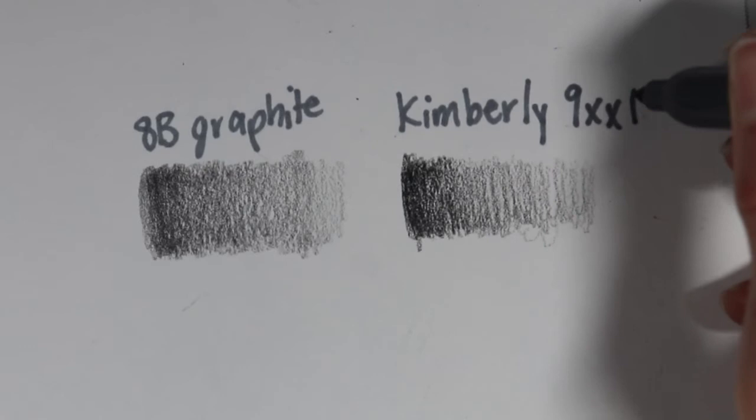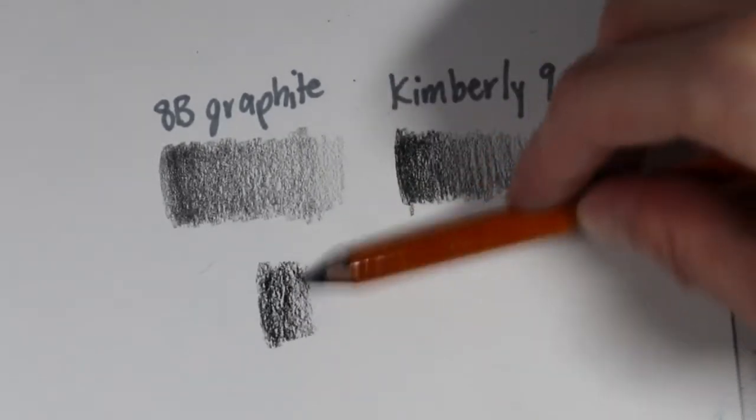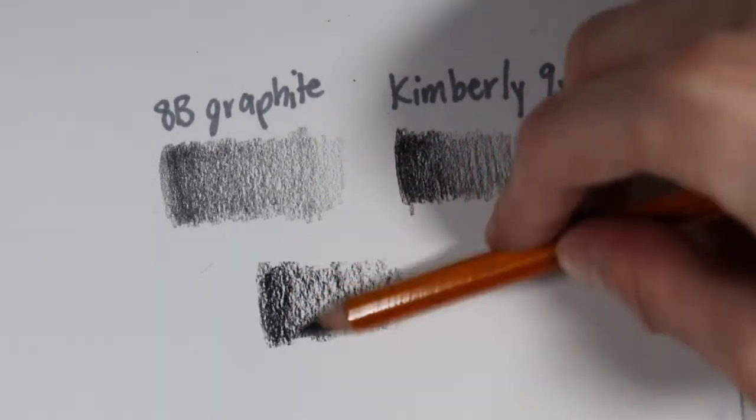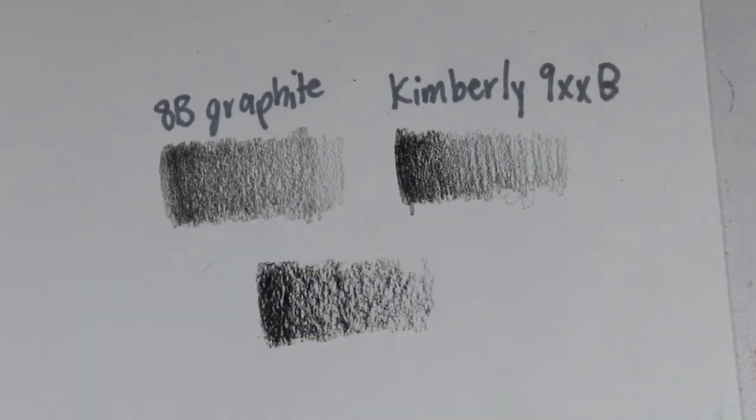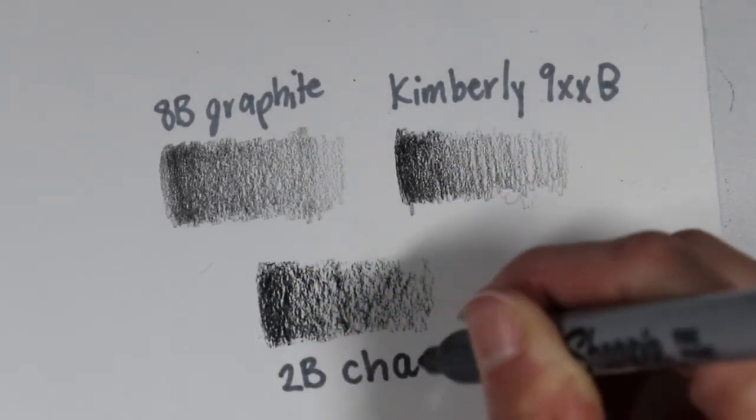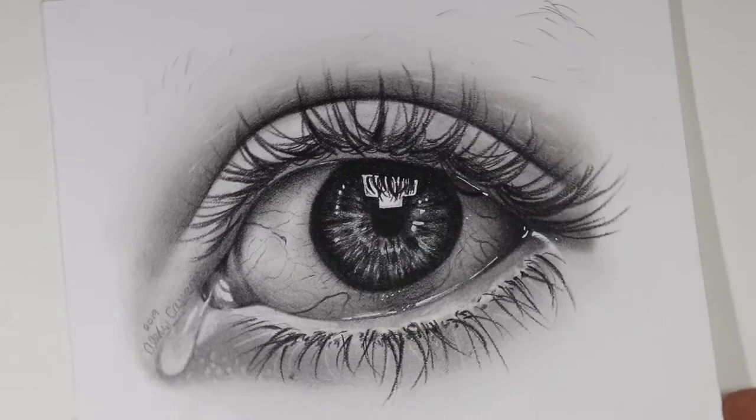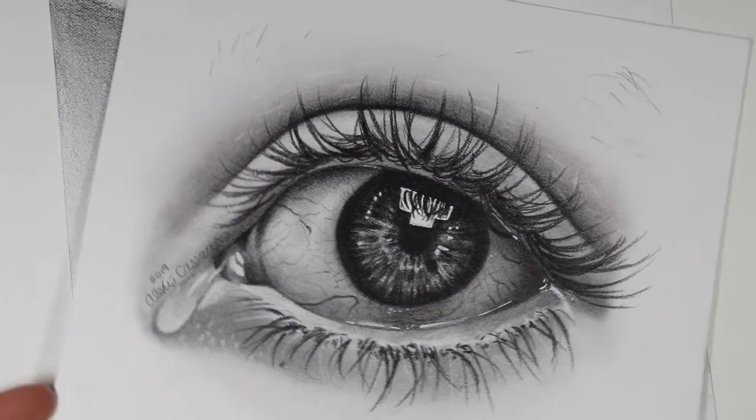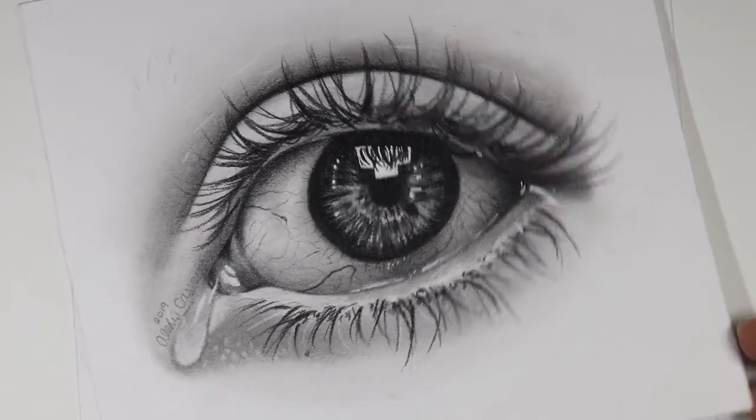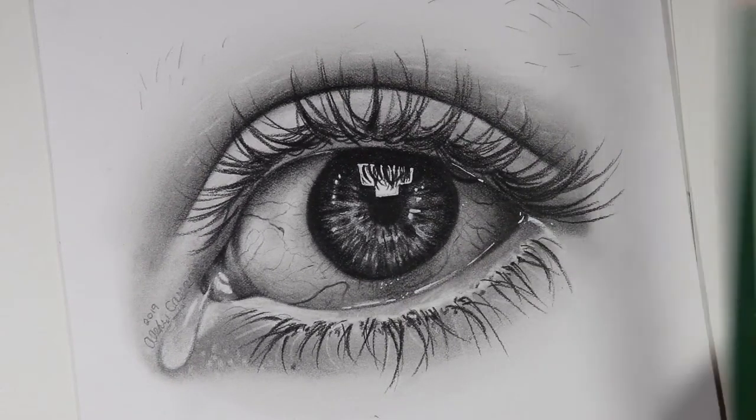It's basically just a much darker value that will really help you get that contrast that you need because I find that sometimes when I work in graphite I lack in contrast. This is a drawing I actually already have a video on up on my channel. It's an eye drawing that I did using graphite and I did use this Kimberly 9XXB pencil to get the shadows in.